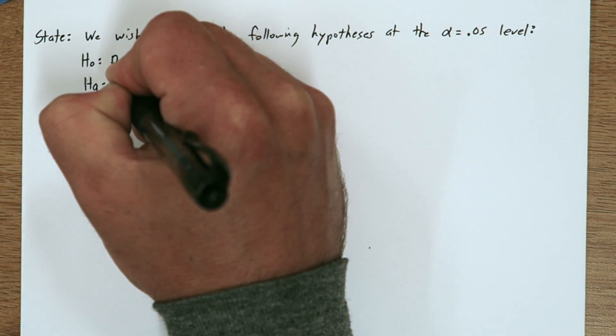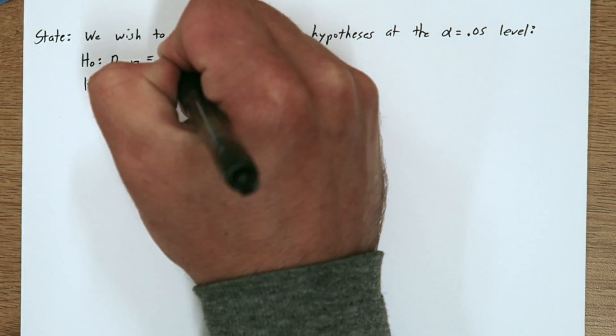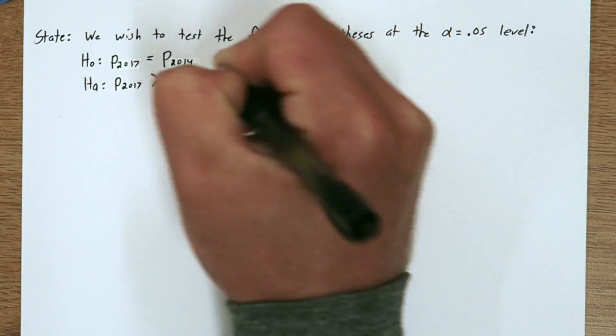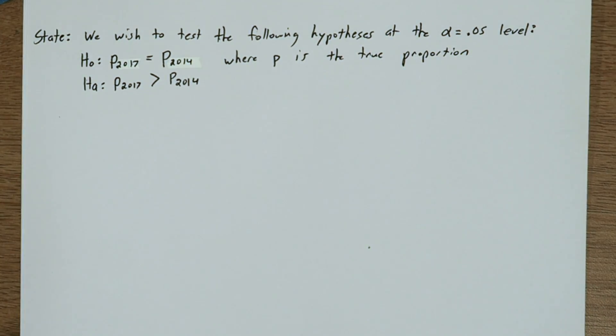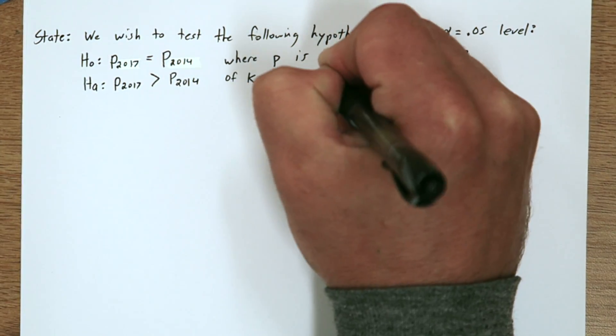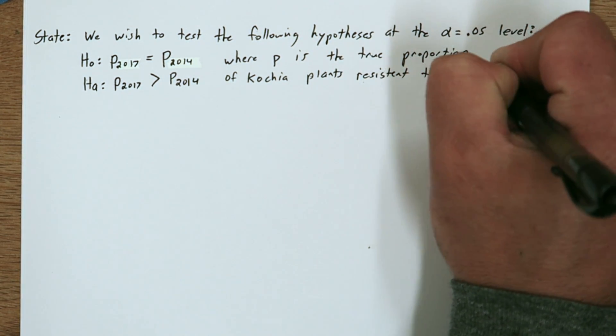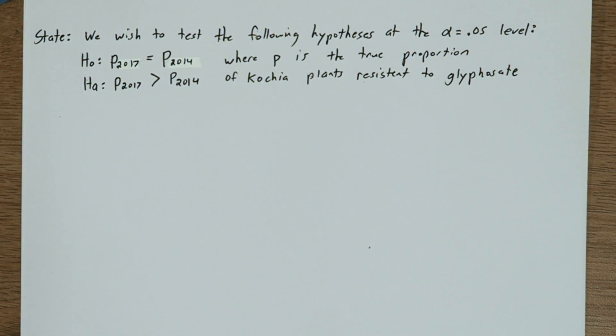The null hypothesis is P₂₀₁₇ equals P₂₀₁₄. The alternative hypothesis is P₂₀₁₇ is greater than P₂₀₁₄, where P is the true proportion of Cochia plants resistant to glyphosate.